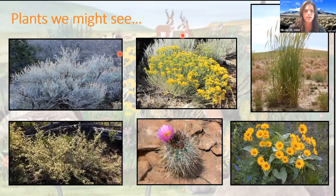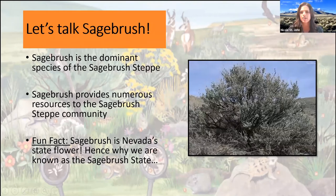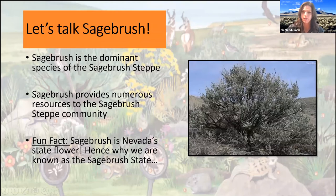Let's talk about sagebrush, since that is a focal point of our talk today. Sagebrush is the dominant species of the sagebrush steppe — it's actually an emblem of the western landscape. It's got that characteristic three-lobed teeth and those very aromatic leaves. It's a pale gray-green in color and it's typically always that color. It flowers in the fall and produces a yellow flower that forms at the top of the plant.